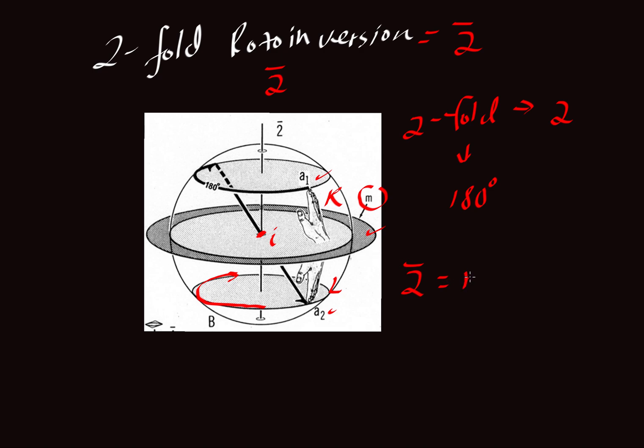So a bar two is the same as M. If you have an M, you can call it a bar two. If you have a bar two, you can call it an M. Either set of instructions will give you the same relationship between these two motifs, whether it's a hand or an atom or a collection of atoms.